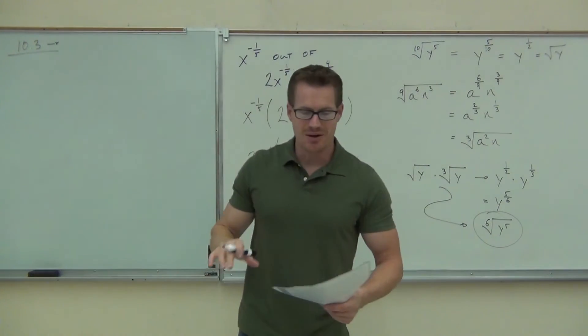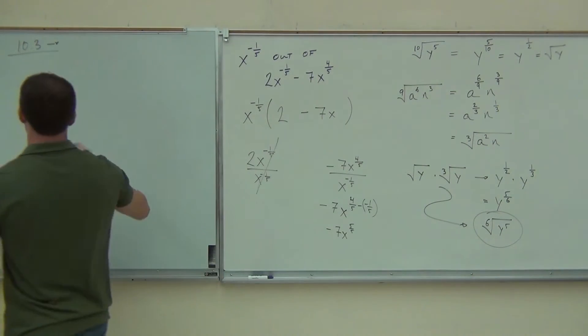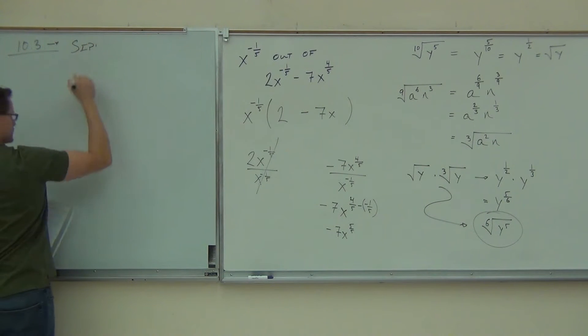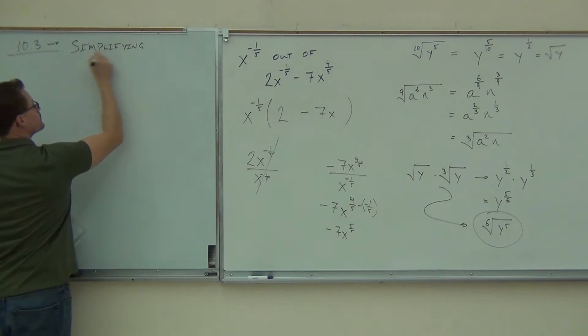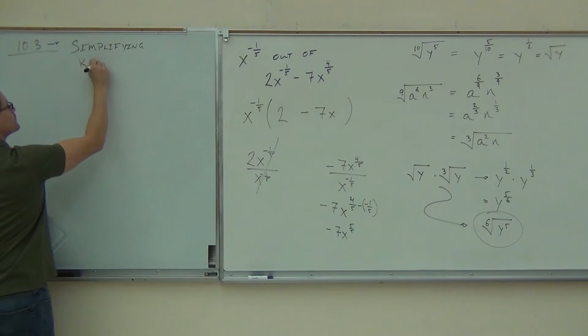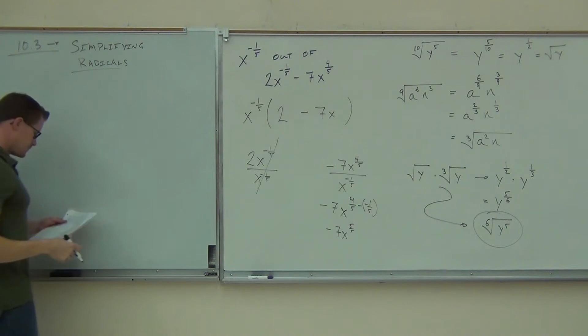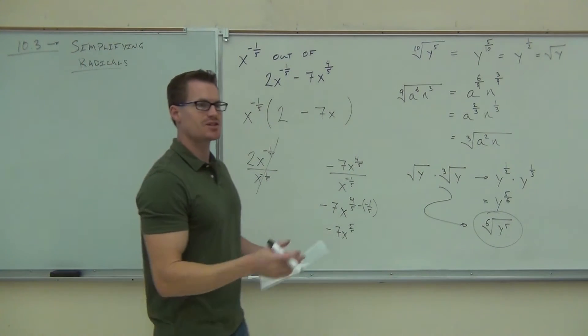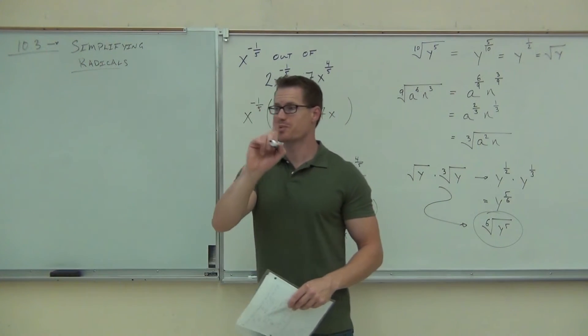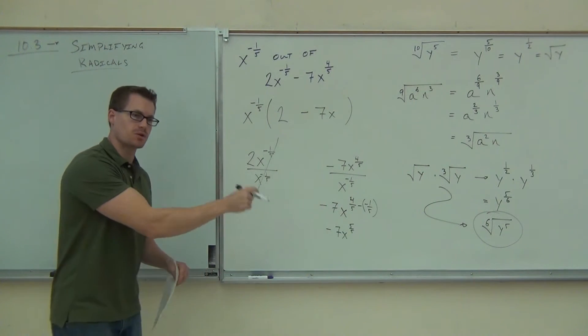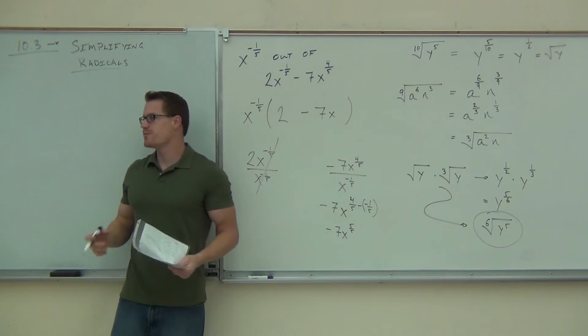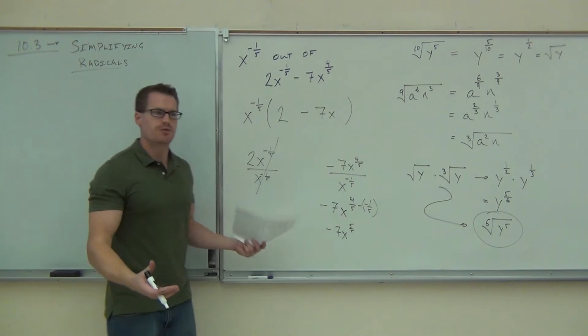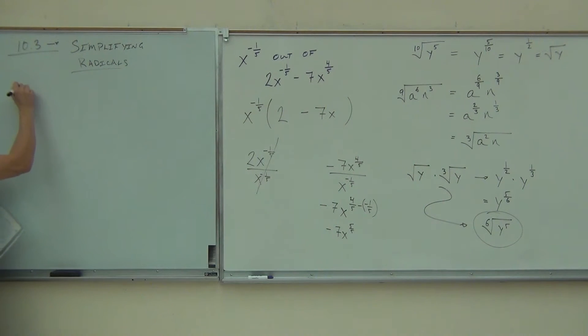We're going to continue on how to simplify some radical expressions. This simplification works on just one principle. It's one little principle, and you guys have seen this for a long time. In fact, you've simplified radicals before. We're just going to make them, of course, a little bit more advanced for this class. Simplifying radicals works on one little rule. It's called the product rule for radicals.